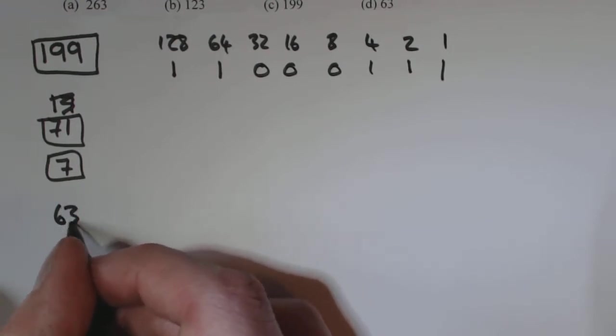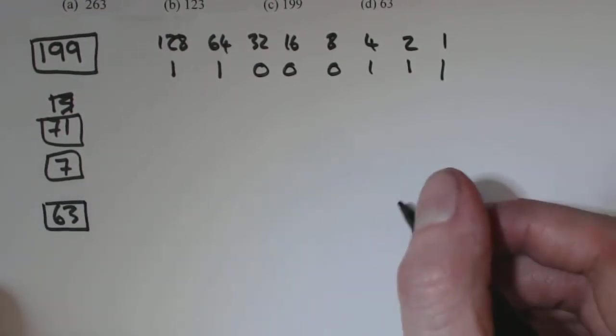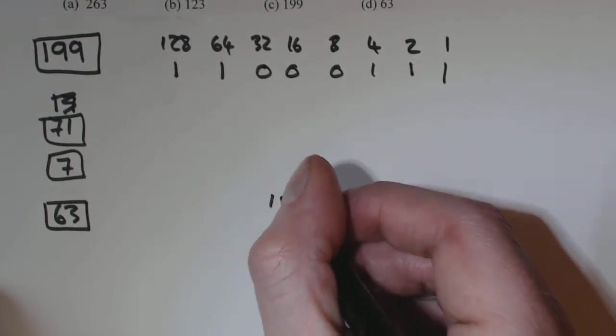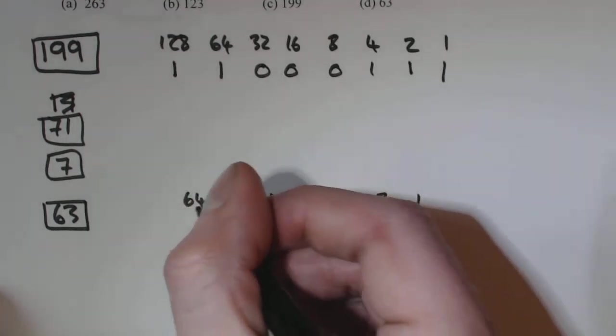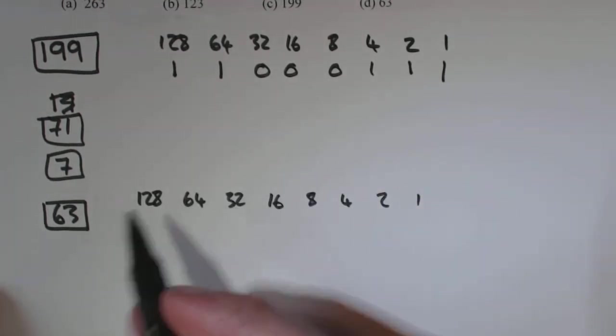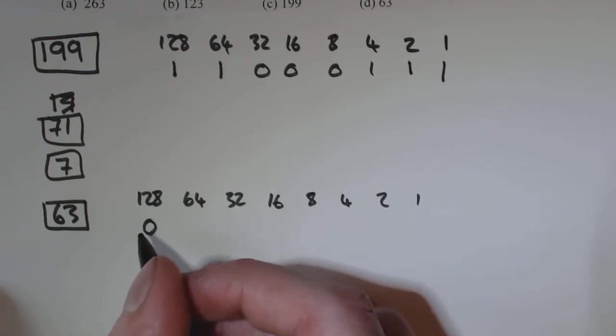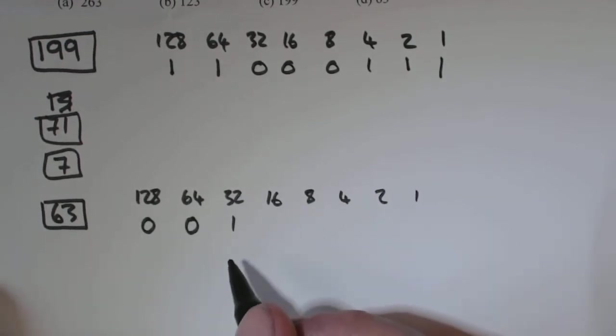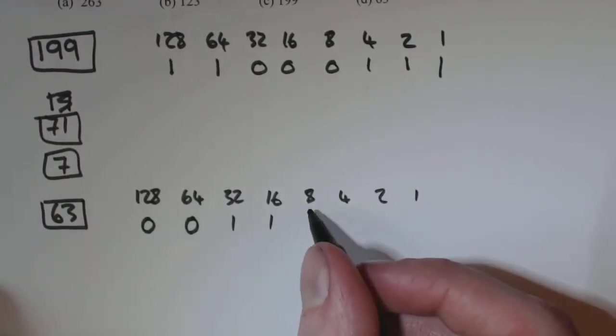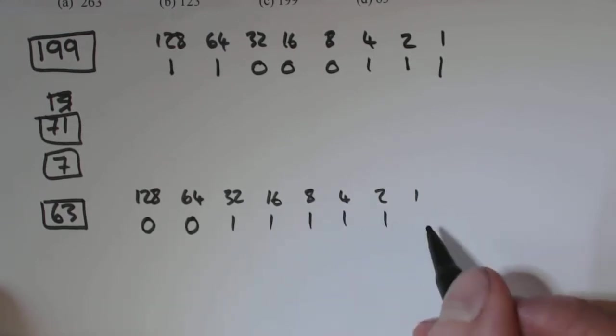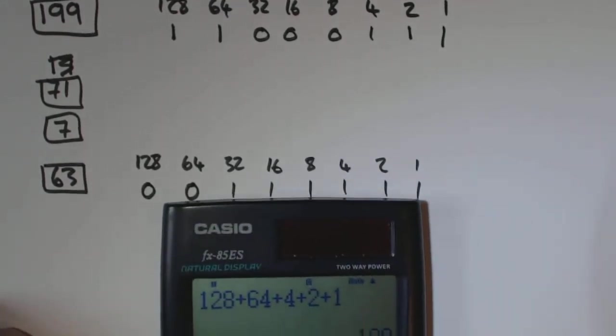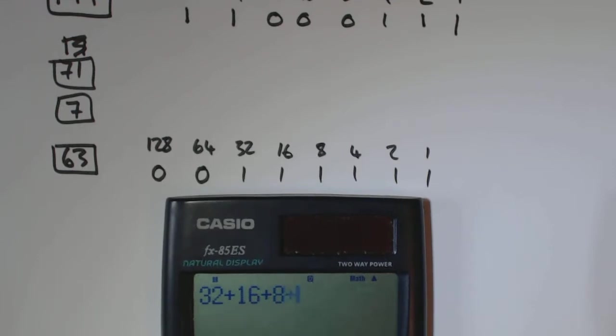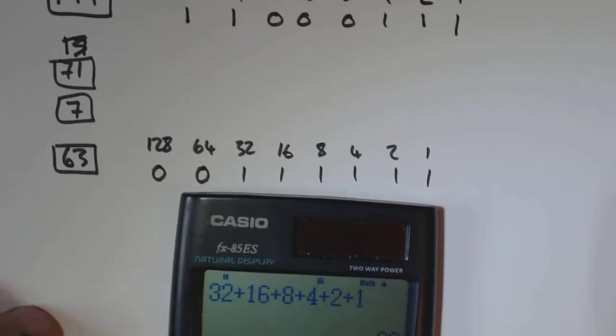And your last one, 63. So these ones were actually quite tricky. But again, we just do the same method as you've done for the rest of them. 64, 128. So 128 doesn't go in. 64 doesn't go in. 32 does. What's left? 16 does. 8 does. 4, 2, 1. And if you add these up, 32 plus 16 plus 8 plus 4 plus 2 plus 1, that's your 63.